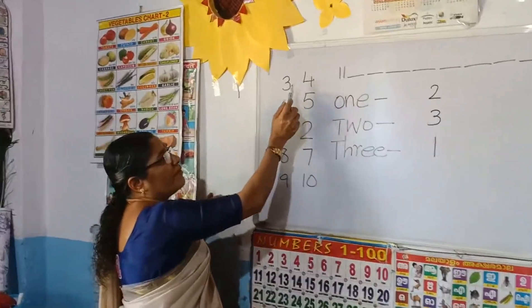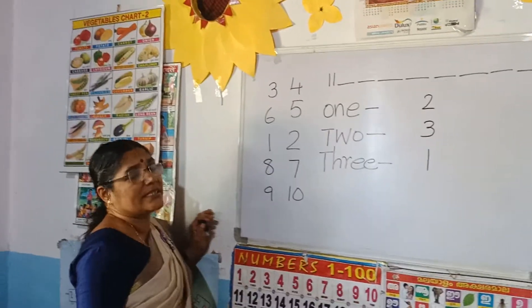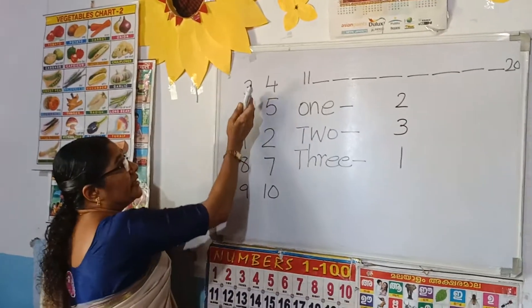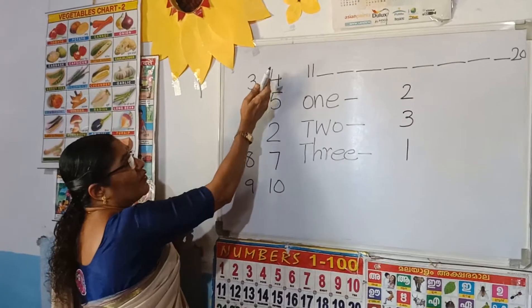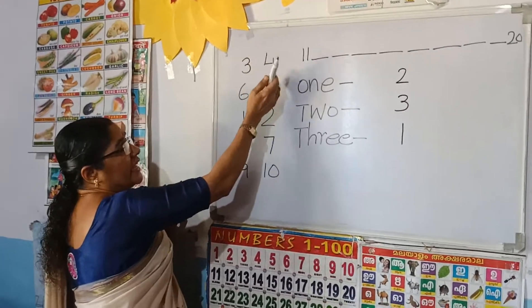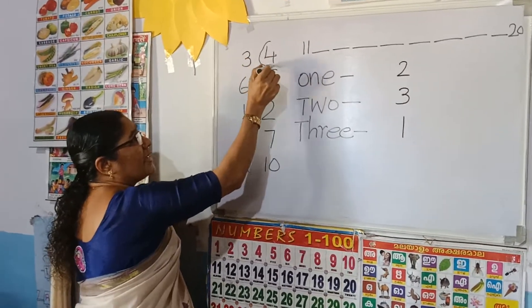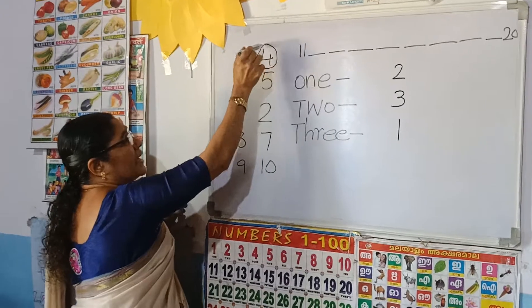3 and 4 — which is the biggest number? Circle the biggest number. 3 and 4: 4 comes after 3, so 4 is the biggest number.